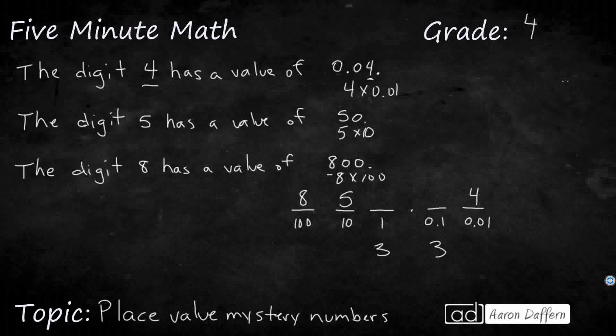And you can fill those in with 3s if you want to. And you can say 853 and 34 hundredths. What you're just looking for, does that 4 have a value of 4 hundredths? Yes. Does that 5 have a value of 50? Yes. Does that 8 have a value of 800? Yes.